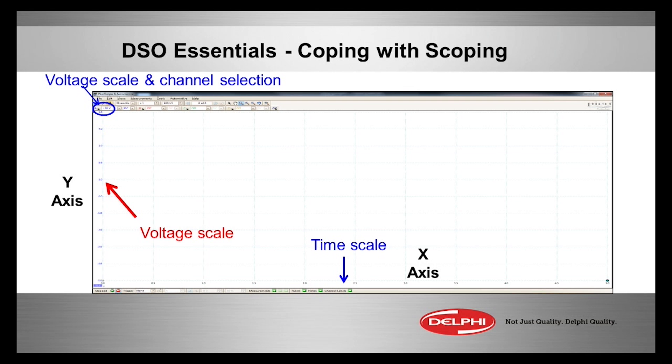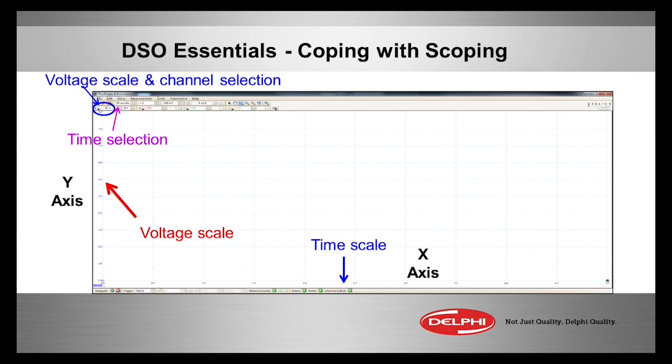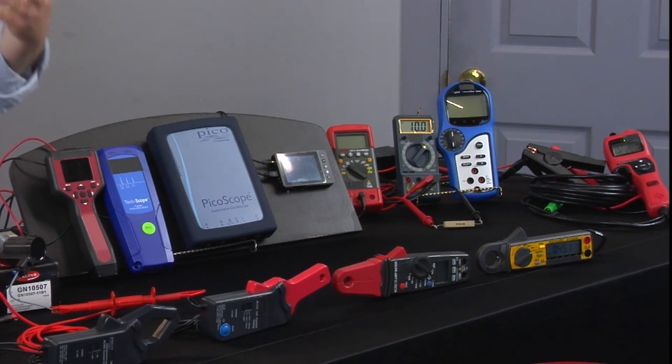If you have a multi-channel scope, you turn the channel on, then you say what kind of voltage or what kind of amperage do I want to see on the y-axis. Then you also do the same thing on the x-axis — left to right — for your time scale: how much pattern do I want in that window that can fit into my laptop screen or the little screen here on these portable scopes.